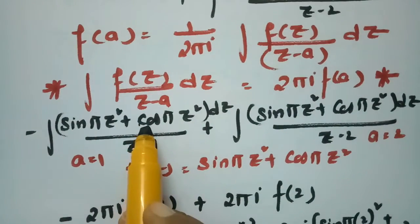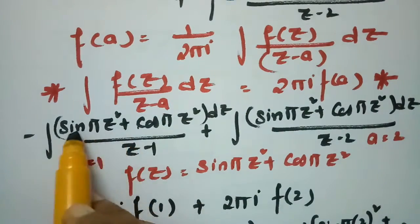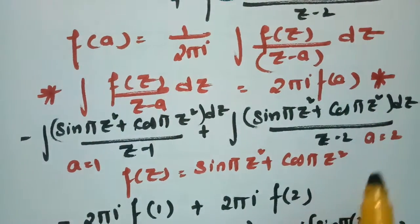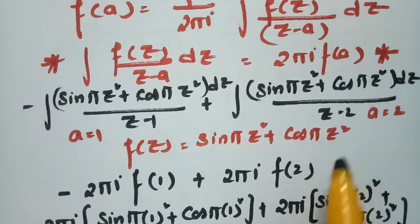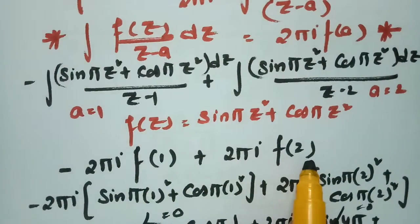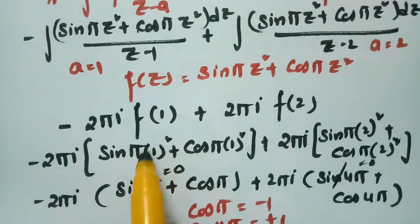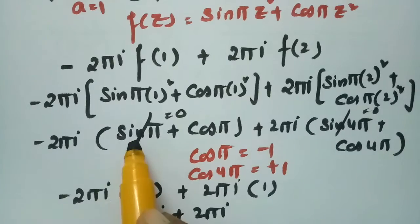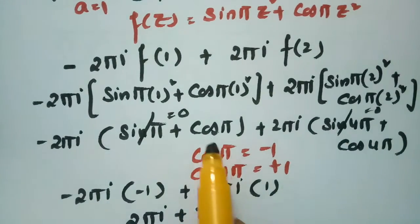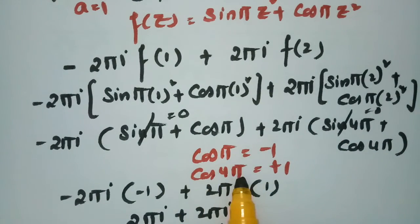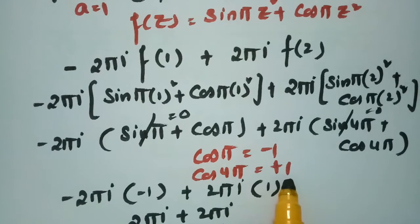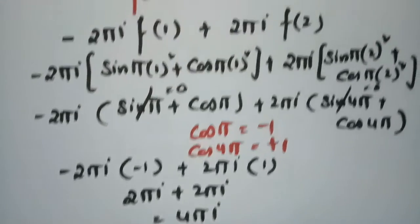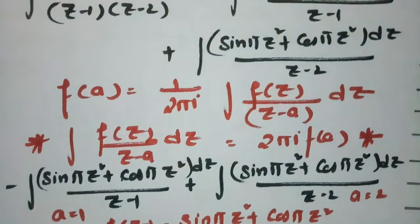Comparing with the formula, f(z) = sin(πz²) + cos(πz²) with a = 1 and a = 2. Evaluating f(1) and f(2): sin(nπ) = 0, cos π = −1, cos(4π) = +1. Substituting all values gives the final answer of 4πi.